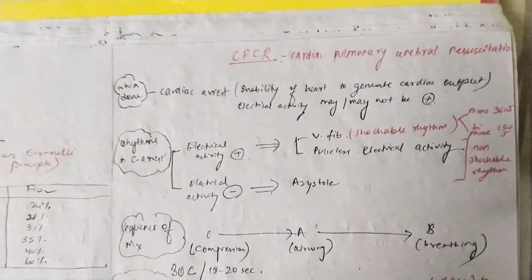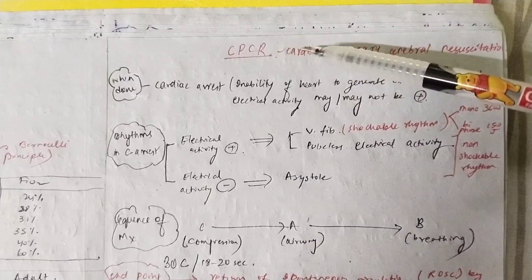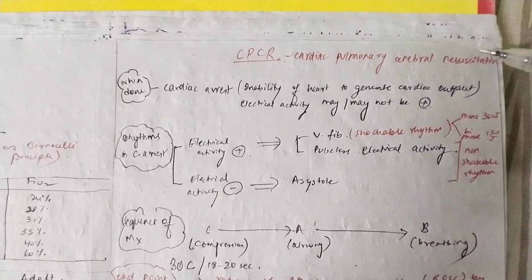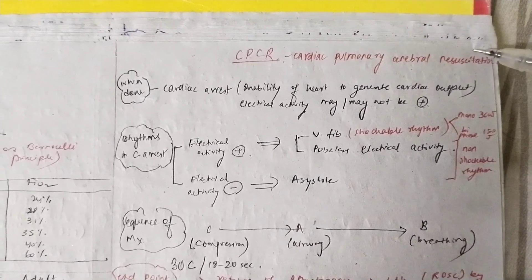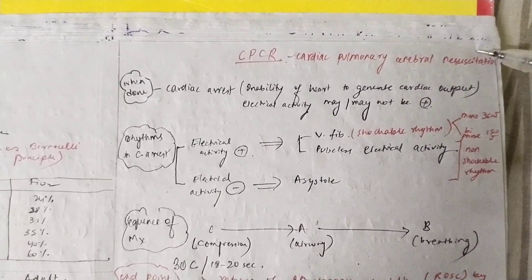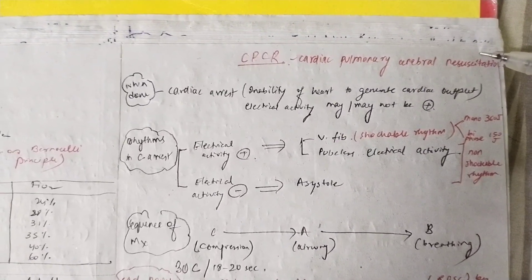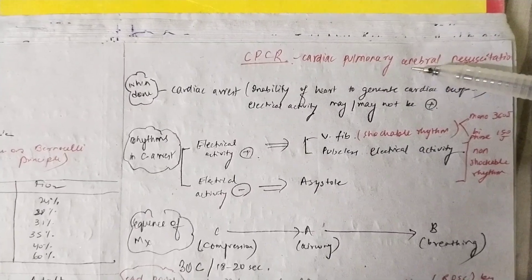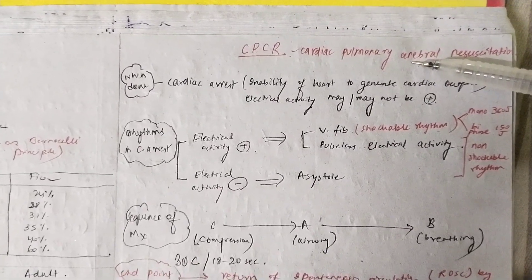So what does CPCR stand for? It stands for Cardiac Pulmonary Cerebral Resuscitation. Earlier it was only called CPR, as you might have heard, but recently one more C — the cerebral component — has been added.